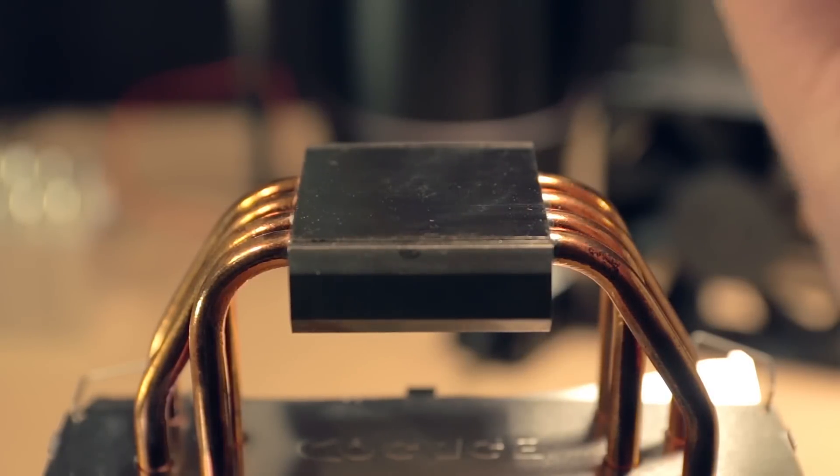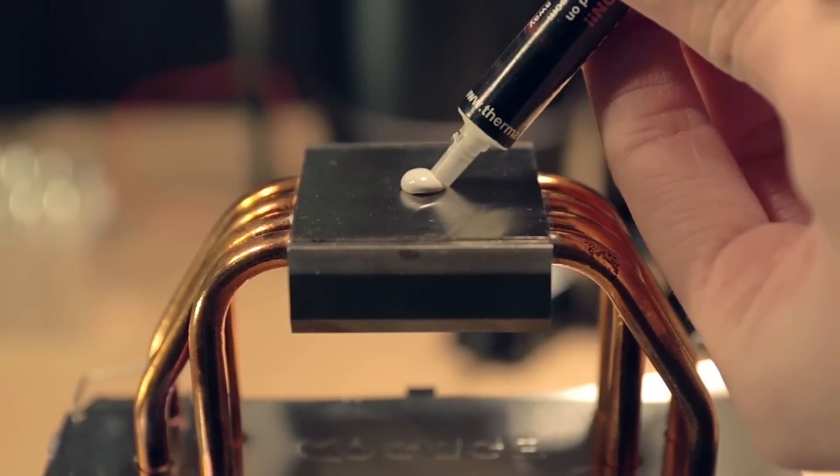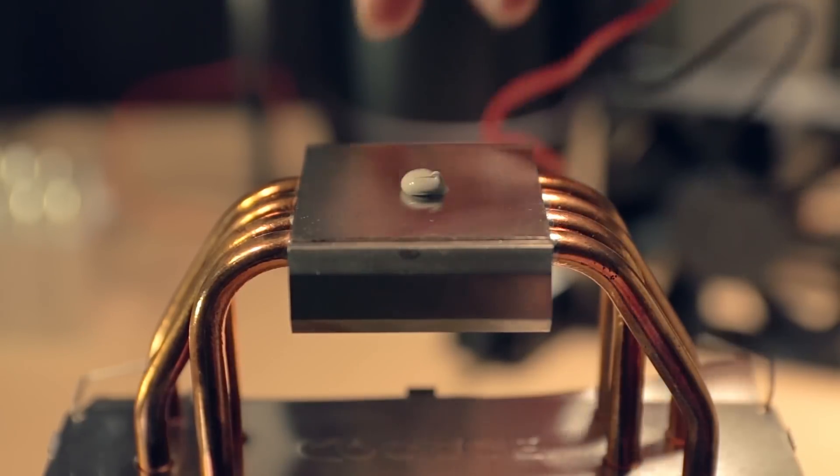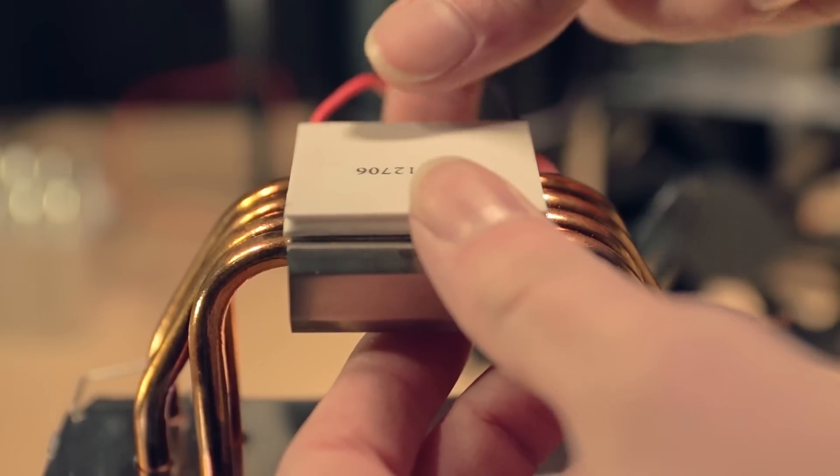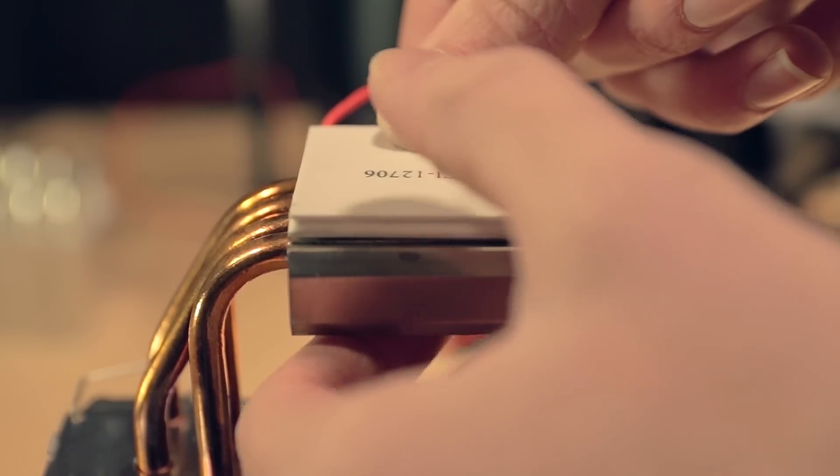So to get things started, I put a small dot of thermal grease on the CPU cooler. I then took the hot side of the Peltier chip and pressed it into the grease, pressing down firmly so that the grease would smush its way all the way to the outside of the chip.